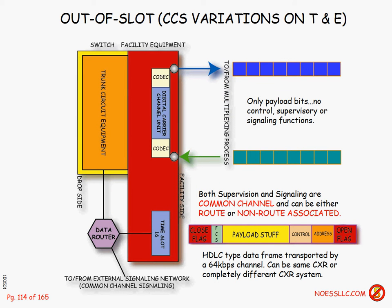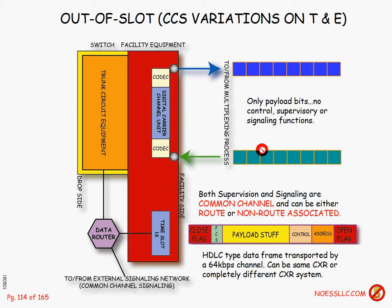And finally: out-of-slot, not out-of-band. People commonly say common channel signaling is out-of-band — that's incorrect. It's completely out of the slot system. Trunking equipment creates a data function telling the distant end to go off-hook for a particular call. That data function can run in time slot 16 within the same system, or in a completely separate system. It's called common channel because this information is common to all voice channels going across the carrier system.